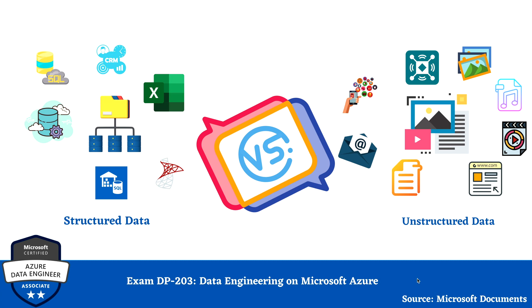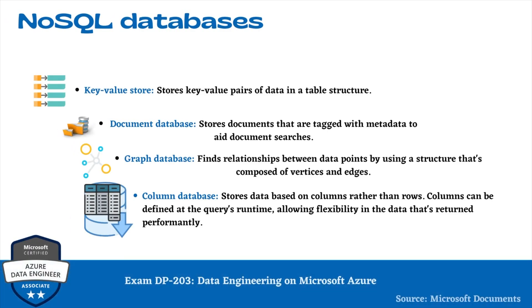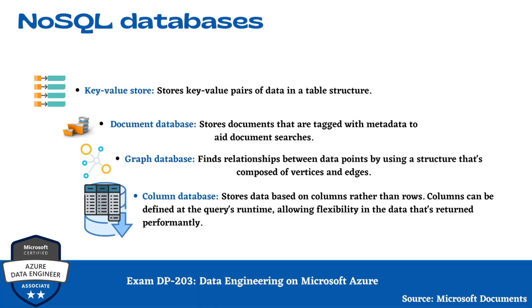The open source world offers four types of NoSQL databases. First is key-value store, which stores key-value pairs of data in a table structure. Second is document database, which stores documents tagged with metadata to aid document searches. Third is graph database, which finds relationships between data points using a structure composed of vertices and edges. And lastly, column database, which stores data based on columns rather than rows, with columns definable at query time for flexible, performant results.